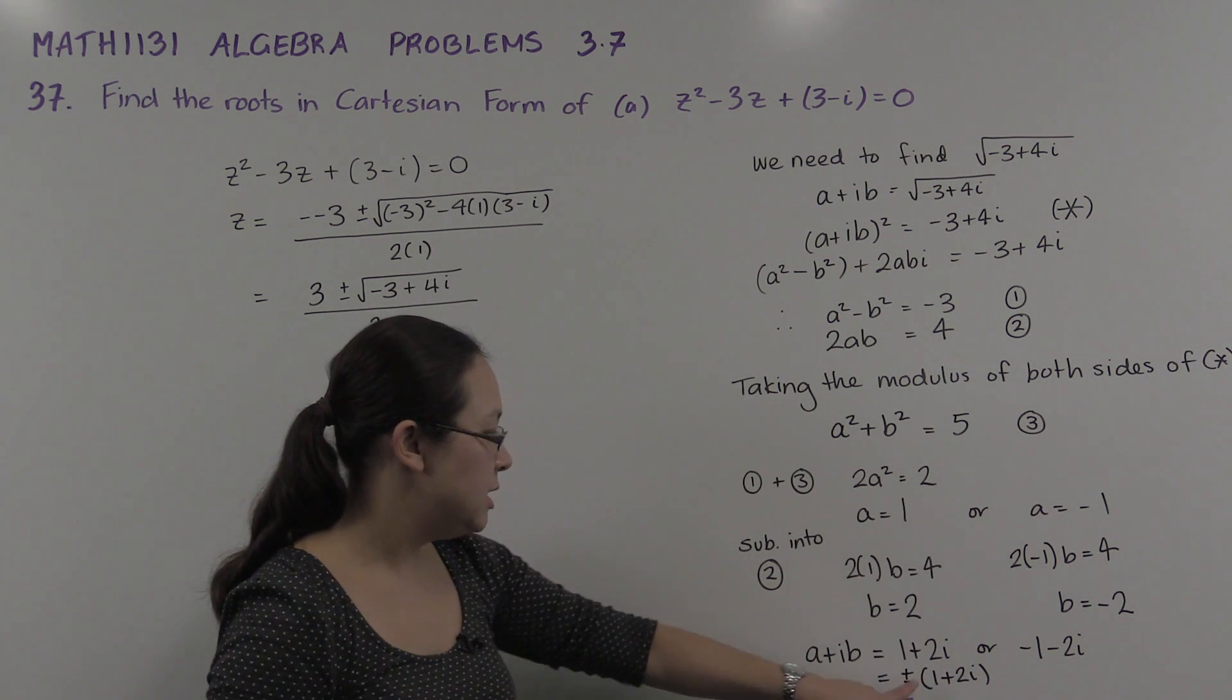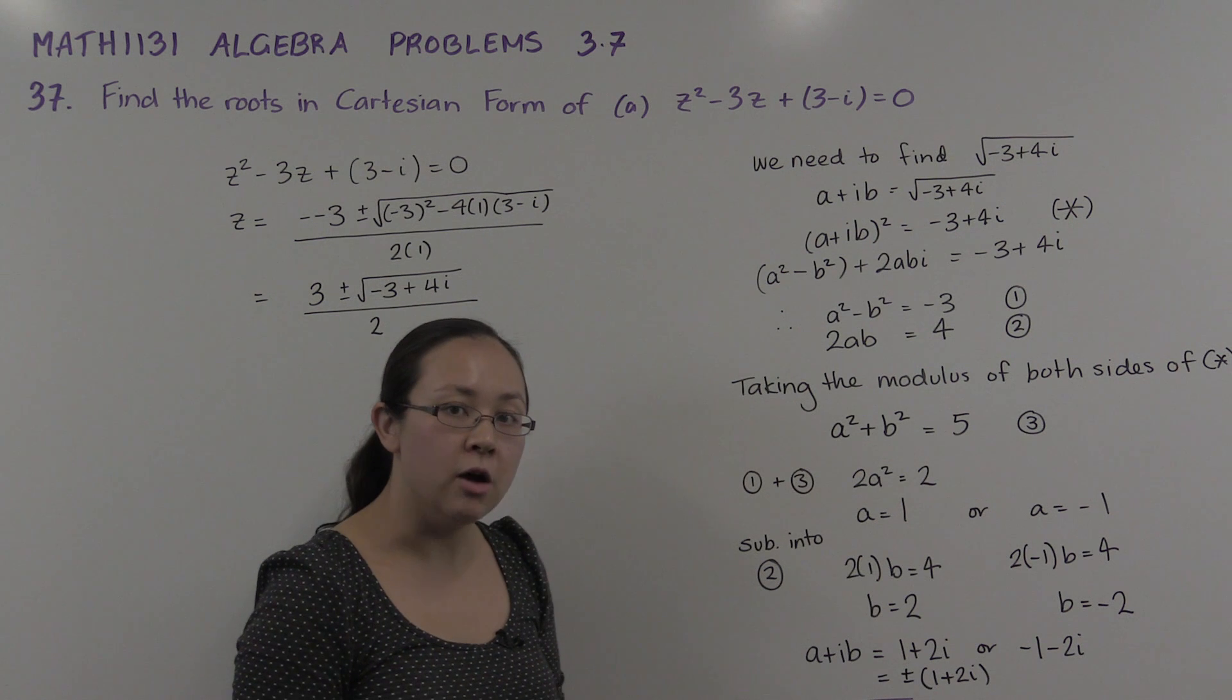We expect 2 square roots. Here are our 2 square roots, the plus and minus versions of 1 + 2i.